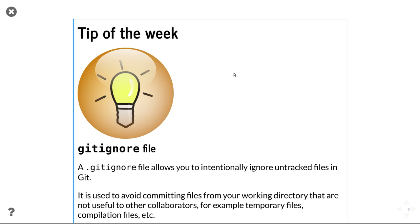The first tip of the week is a concept in Git: the .gitignore file. It's a specific file that you can add to your repository, just called .gitignore. You can create that file and add it to your repository. What it allows you to do is ignore certain files in your GitHub repository.